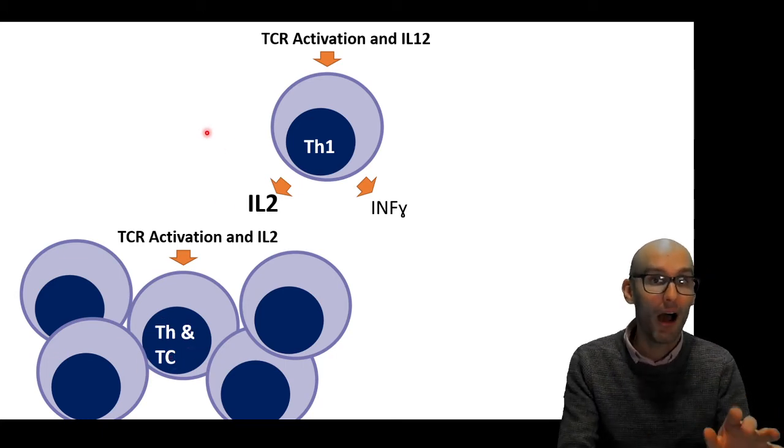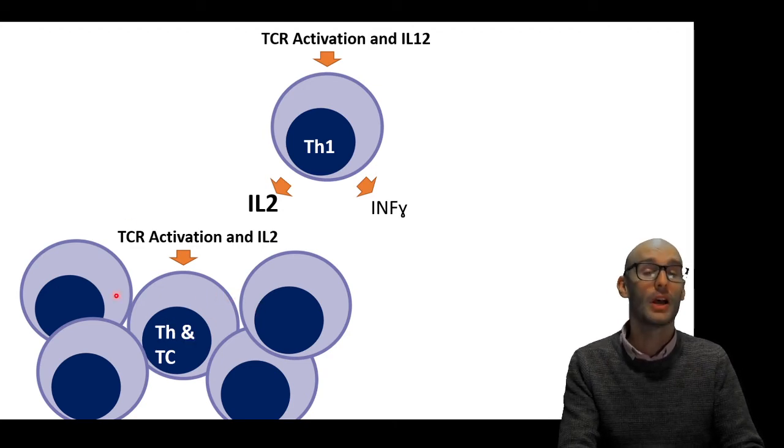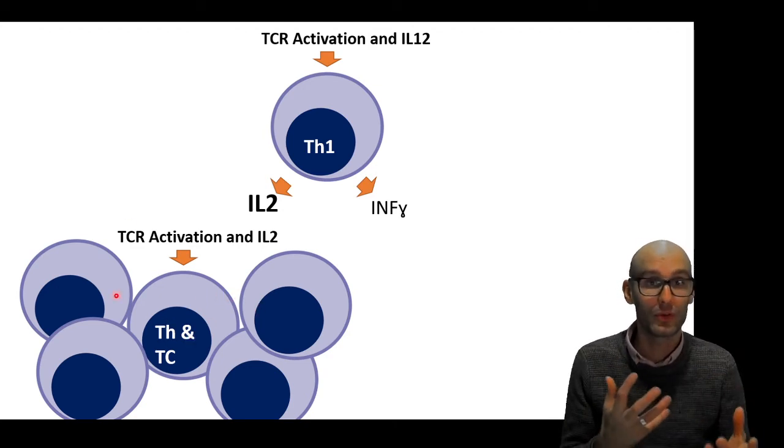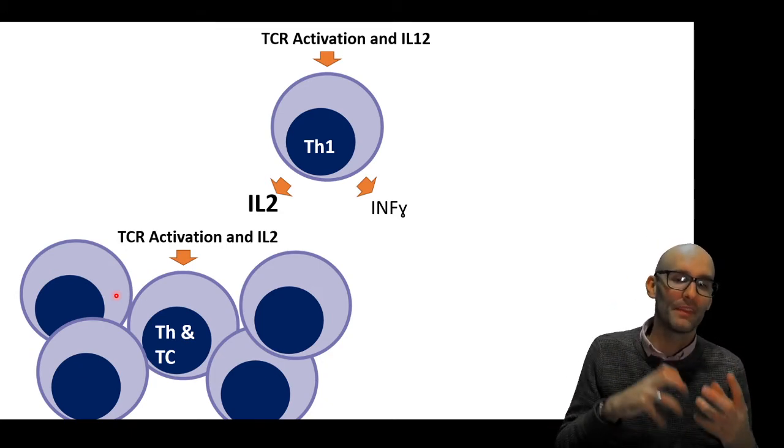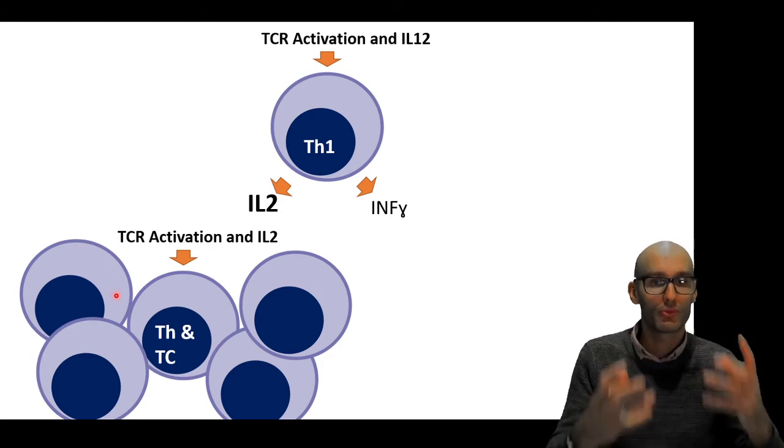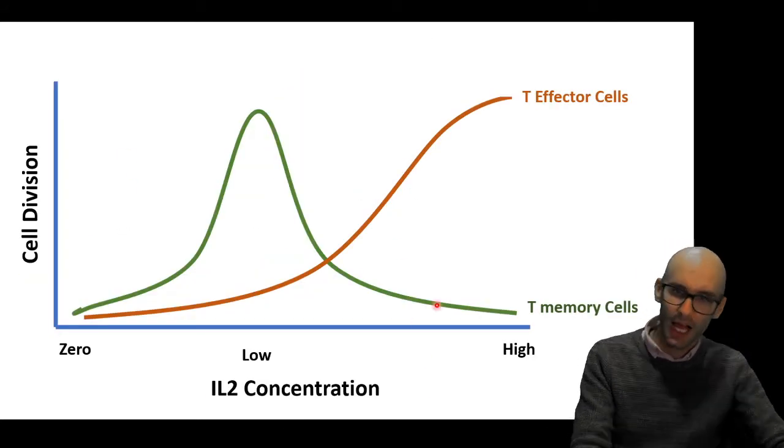Now, there will be IL-12 floating around right now. So these T helper cells will then be exposed to the IL-12, turning them into TH1 cells. So we're going to get this massive self-proliferation process.